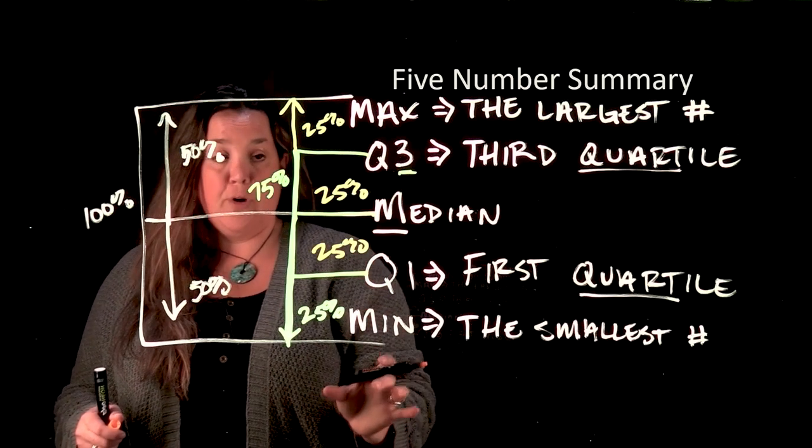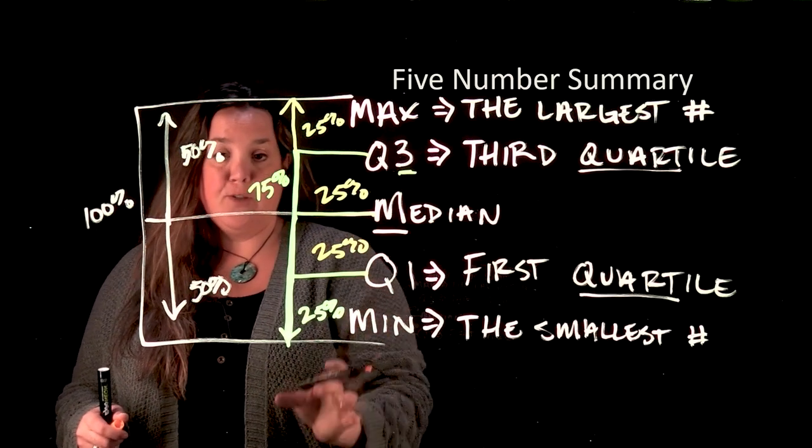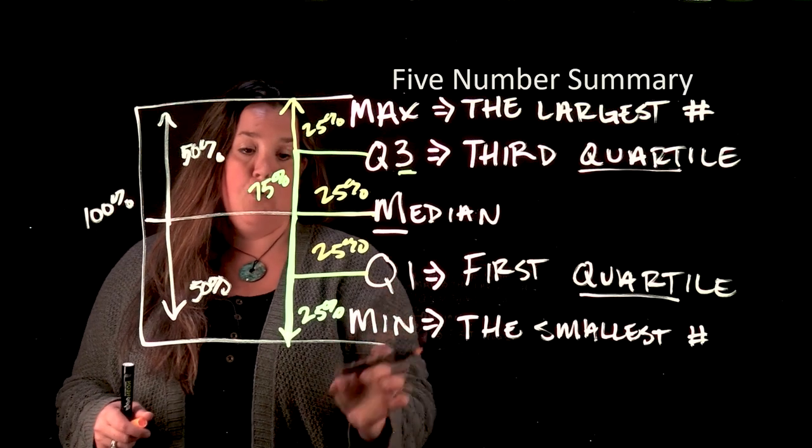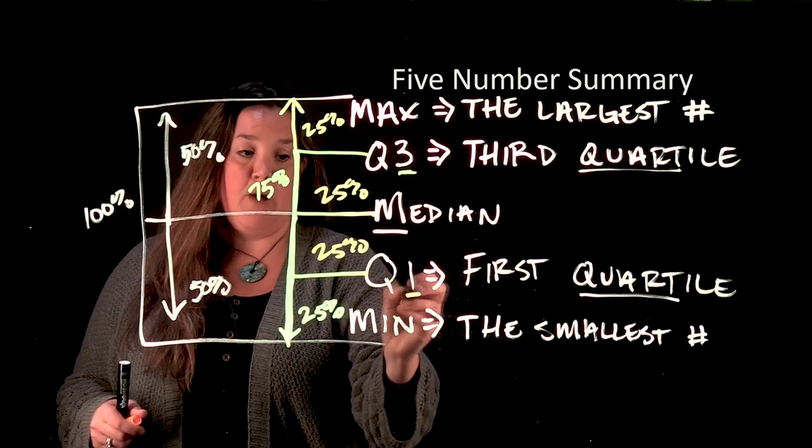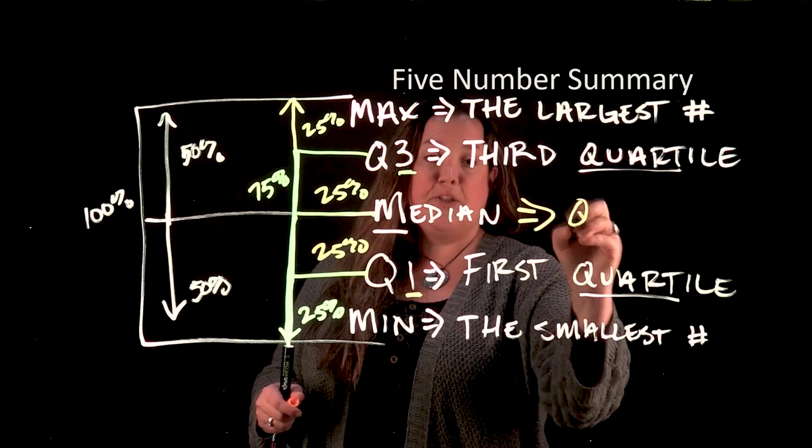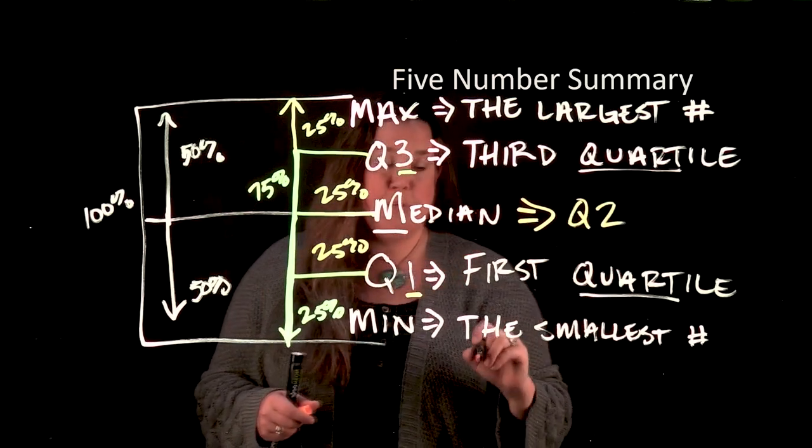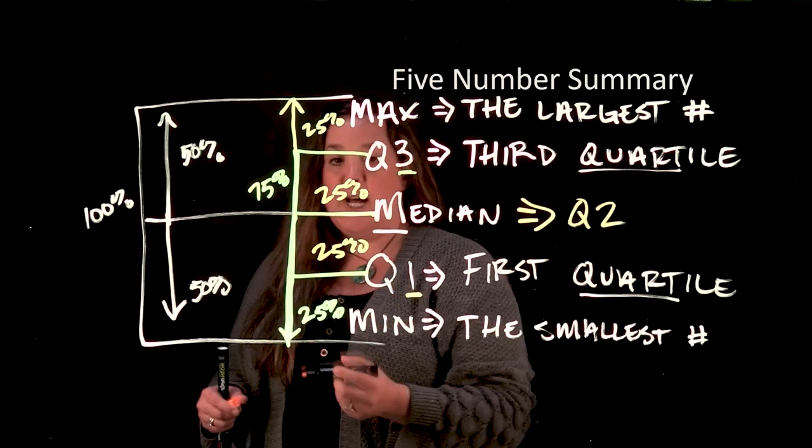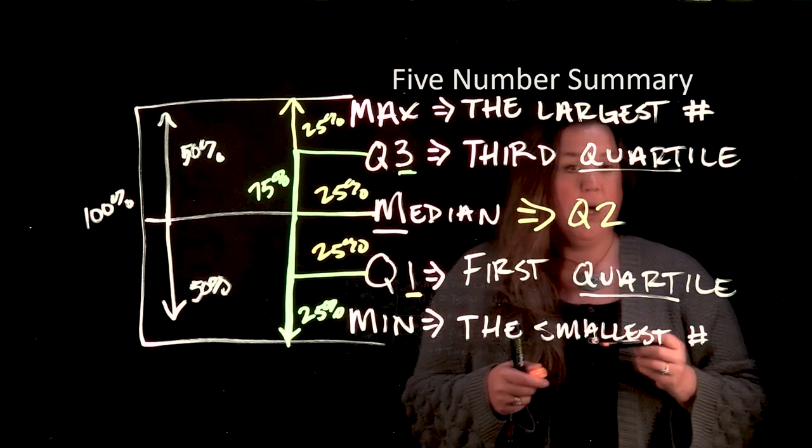Q3 has three quarters below it, the median has two quarters below it, Q1 has one quarter below it, that's why it gets the name Q1. So stands to reason then that the median could also be called Q2, because it has two quarters of the data below it.